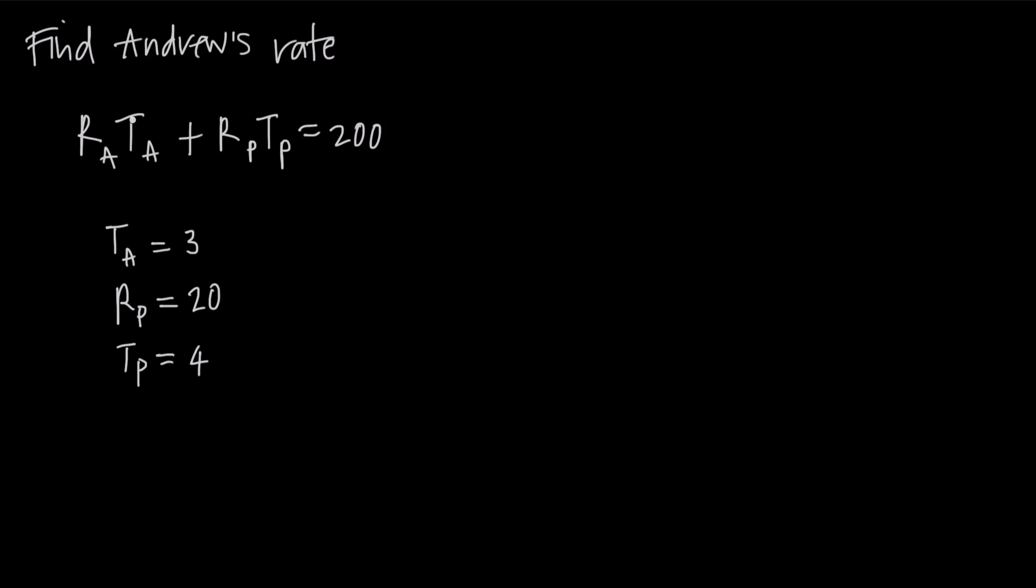So r sub a times t sub a. You have to think about r sub a as just a single variable like x, and t sub a as a separate variable like y. So when we have some value and then a subscript, the two together are just a single variable, represent a single value.